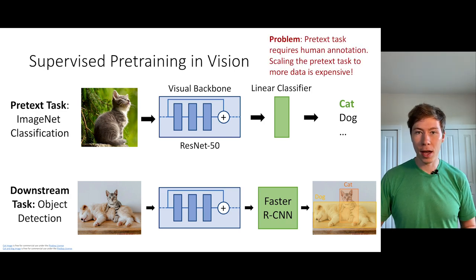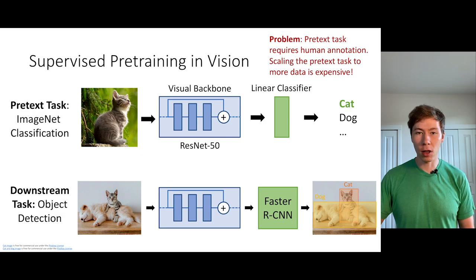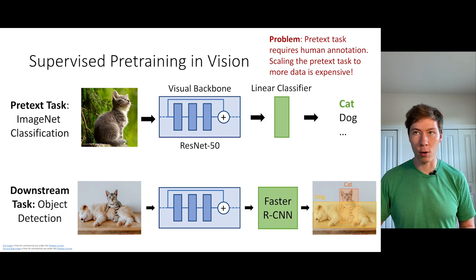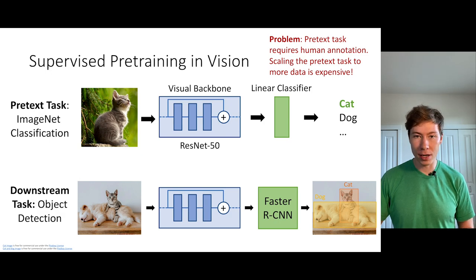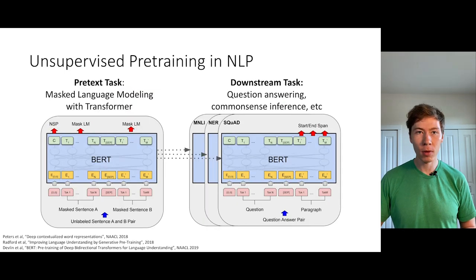But the big problem is that this pretext task of supervised classification on ImageNet relies on a lot of human-specified annotation. In particular, scaling the amount of data that we train on for this pretext task of classification is very, very expensive.